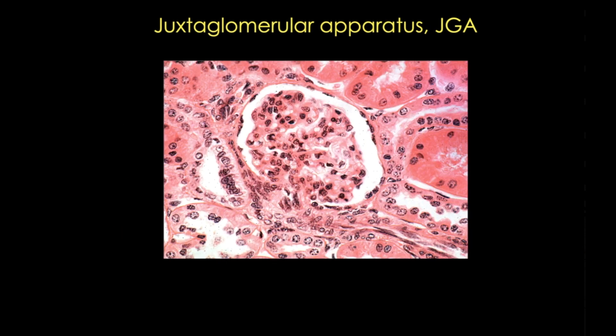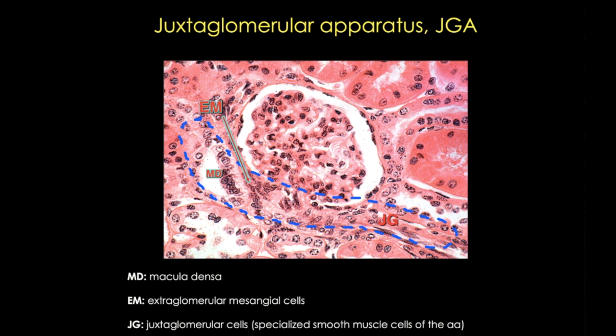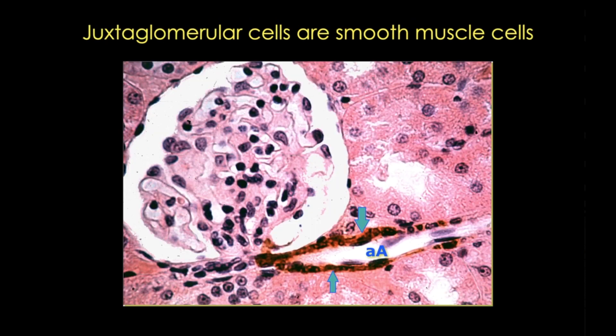In this H&E stained section, you can appreciate the macula densa, the extraglomerular mesangial cells, and the smooth muscle cells of the afferent arteriole. This next section doesn't have the macula densa in view, but you can see the juxtaglomerular cells of the afferent arteriole, which in this case are stained for renin.